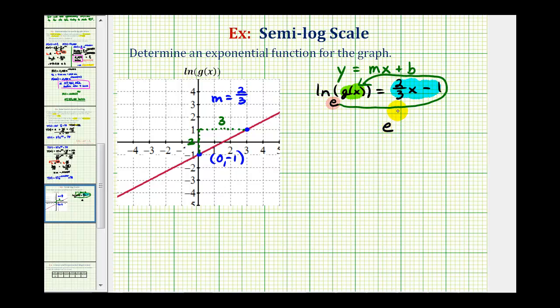So this is an exponential function, but now we need to write it in the form g(x) = a·b^x.